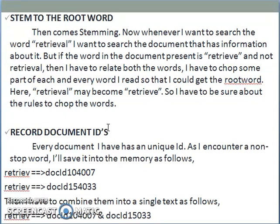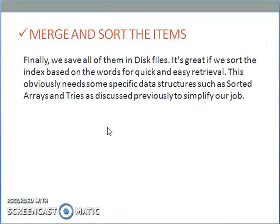The fourth step is to record document IDs. Every document will have a unique ID. As you encounter a non-stop word, say 'best' or 'butterfly', you save it into memory. For example, if the word 'retrieve' occurs in the first document, the document ID would be doc_id 104007, and in the second document, doc_id 154033. You then combine them into a single entry: retrieve → doc_id 104007, doc_id 154033. Finally, you merge and sort all the items — sorting the index based on words allows for quick and easy retrieval, using data structures such as sorted arrays and tries.